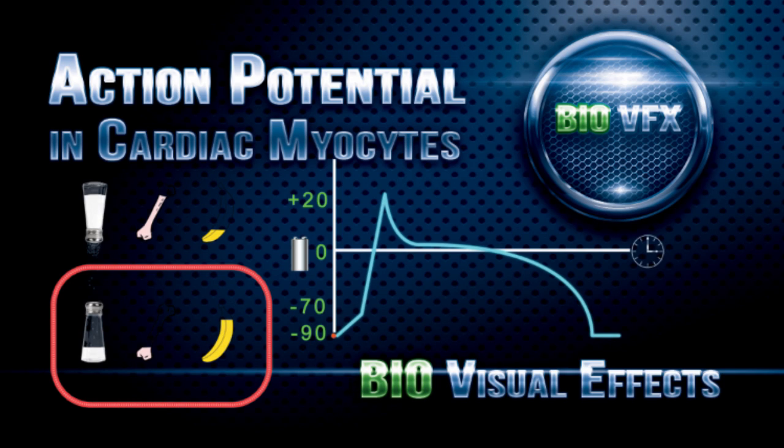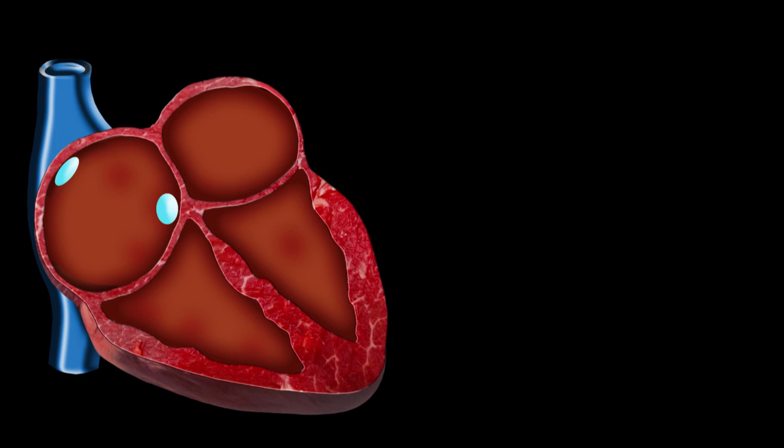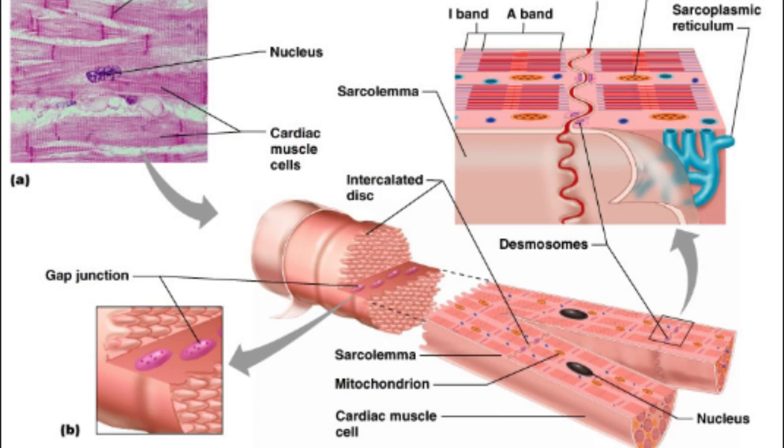The heart generates its own electrical impulse for the muscles to contract. Pacemaker cells initiate that electrical impulse. This video is not about pacemaker cells. This video will focus on the voltage passing through contractile myocardiac cells.